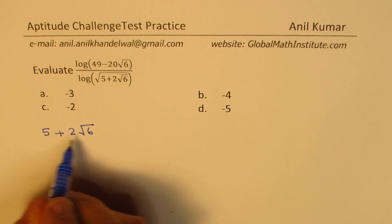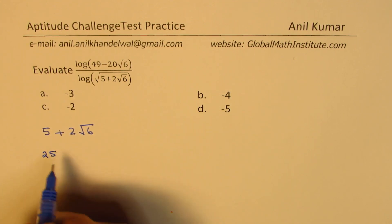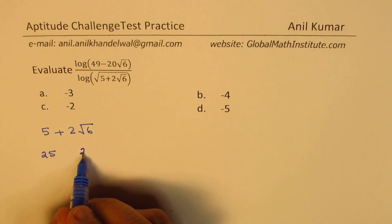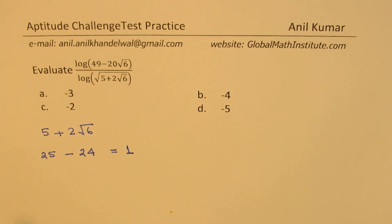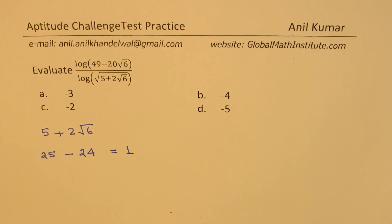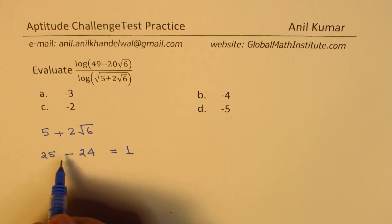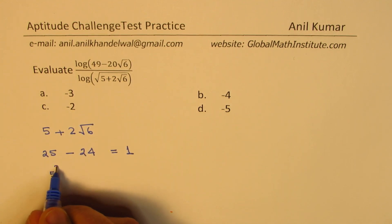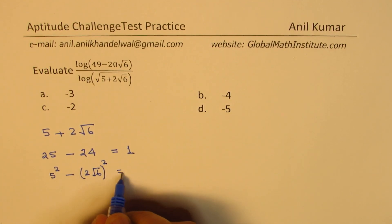You will notice that if we square each part: 5 squared is 25, and the square of 2 square root 6 is 4 times 6, which is 24. Their difference is just 1. So what we notice here is that they can be seen as squares of two numbers with a unit difference.